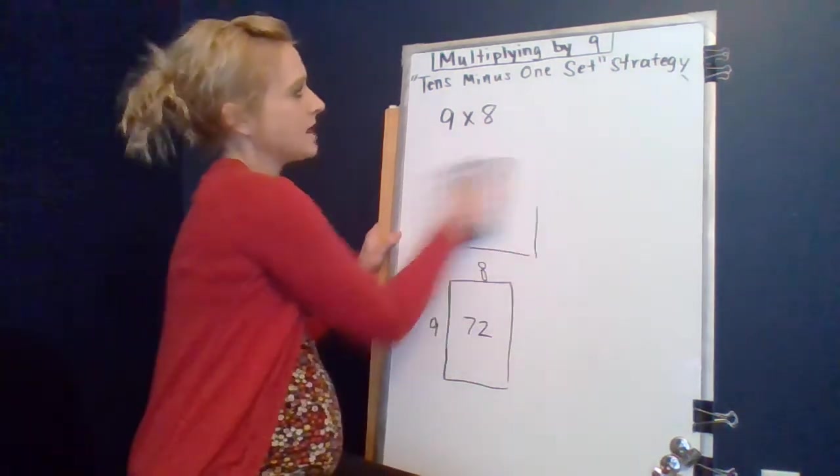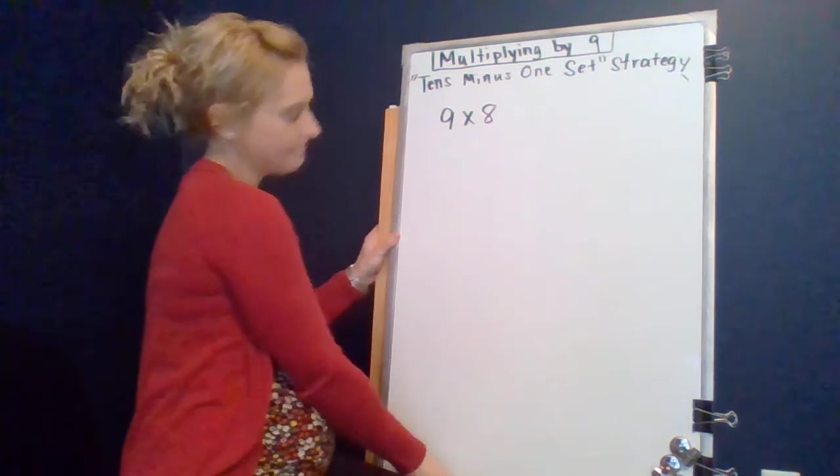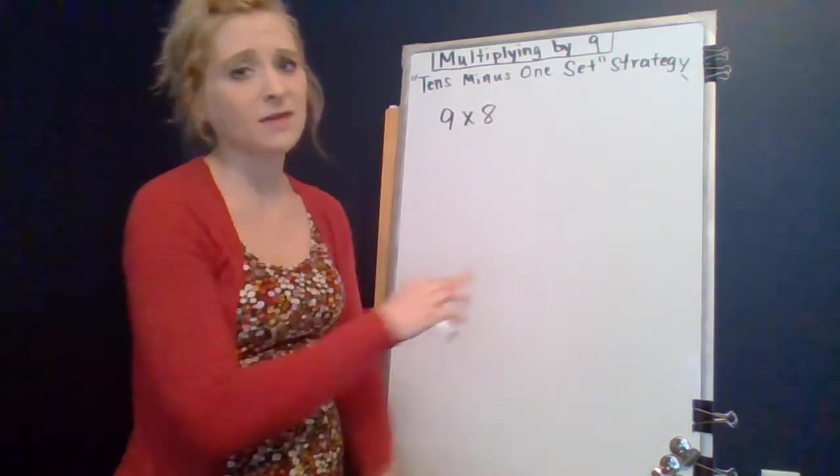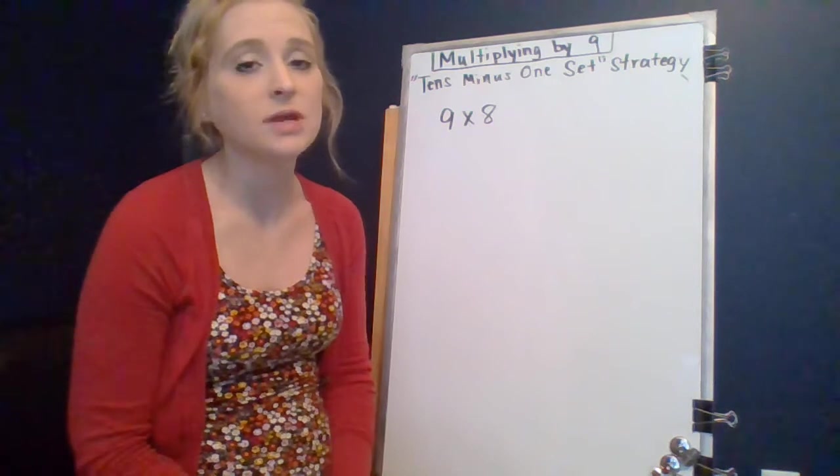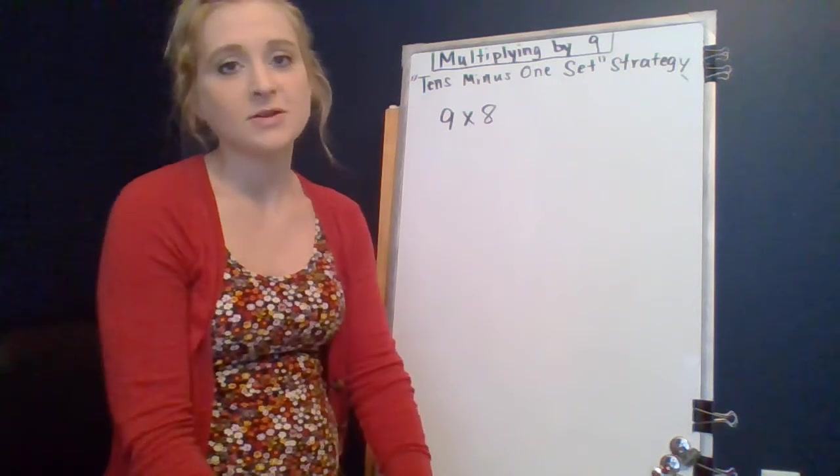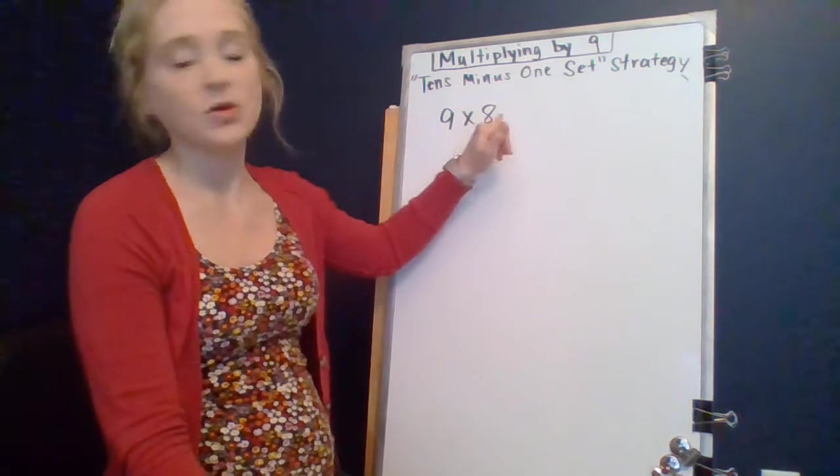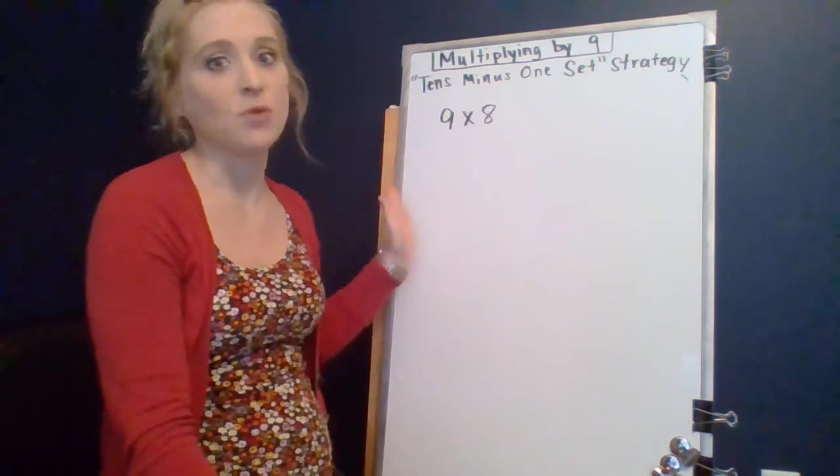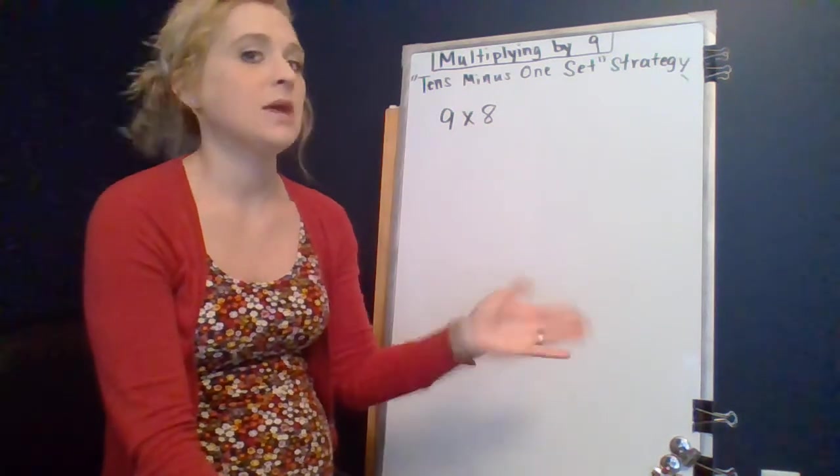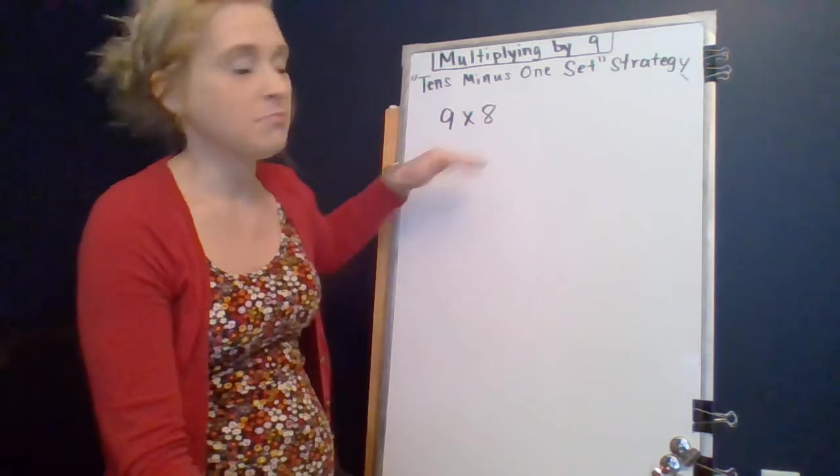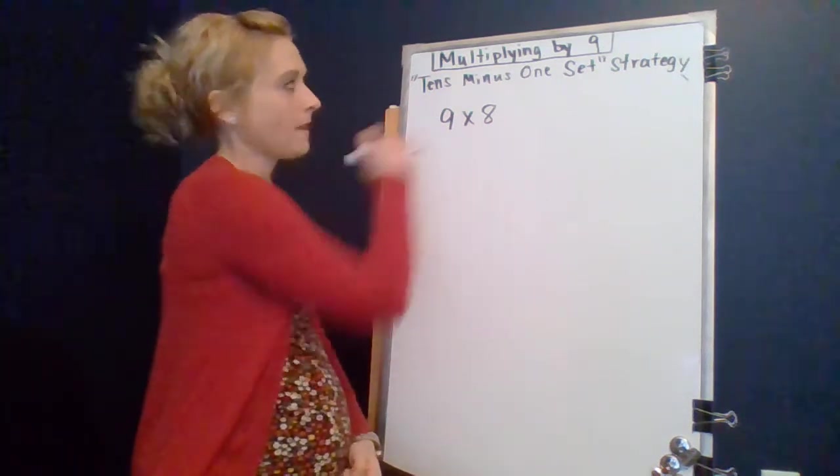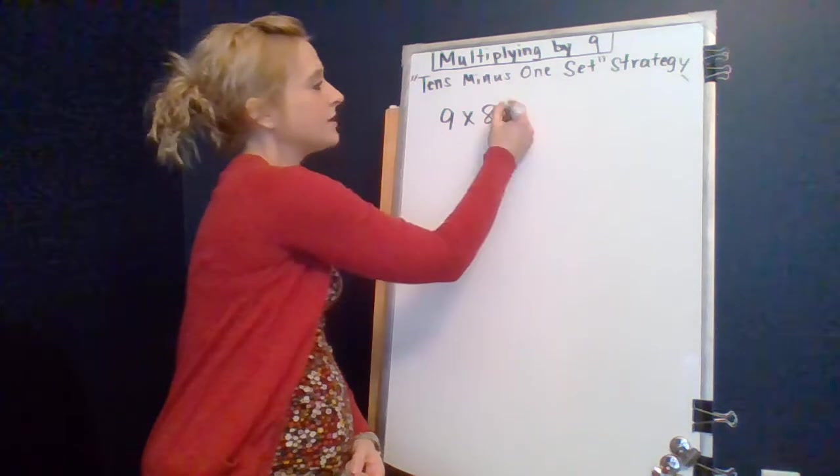So if we're using the tens minus one set strategy, and by the way, if you want to explore that commutative property a little bit more, get out some coins, get out some pennies and make nine rows of eight and then make eight rows of nine and you'll see it's the same number of pennies in both arrays. So, ten minus one set strategy.